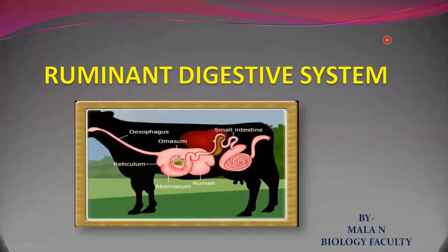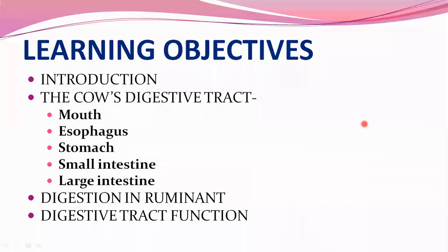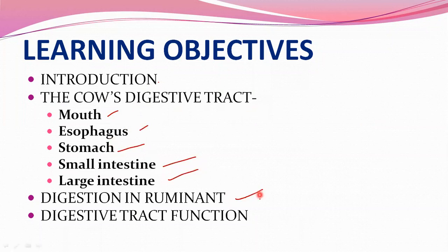Dear students, I'm Mala and today I'm going to discuss the ruminant digestive system. The learning objectives are: introduction, a cow's digestive tract including mouth, esophagus, stomach, small intestine and large intestine, digestion in ruminants, and digestive tract function.